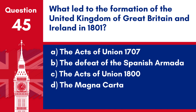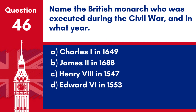Question 45. What led to the formation of the United Kingdom of Great Britain and Ireland in 1801? a. The Acts of Union 1707. b. The defeat of the Spanish Armada. c. The Acts of Union 1800. d. The Magna Carta. Answer: c. The Acts of Union 1800 formed the United Kingdom of Great Britain and Ireland in 1801 by uniting the Kingdom of Great Britain with the Kingdom of Ireland.